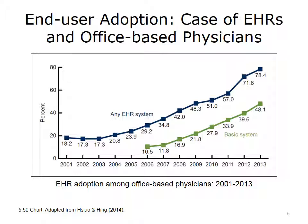Similar to the increased adoption of EHRs among hospitals, as depicted by this diagram, the adoption of EHRs has also increased among office-based physicians. Indeed, the adoption of basic EHR systems, which include more features than any EHRs, has increased from almost 10% in 2006 to more than 48% in 2014. This rate has increased from 18% in 2001 to 78% in 2013 for any EHR systems. This has enabled analysts to collect local EHR data from office-based physicians and develop outpatient population health repositories.